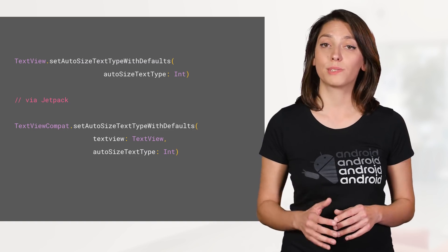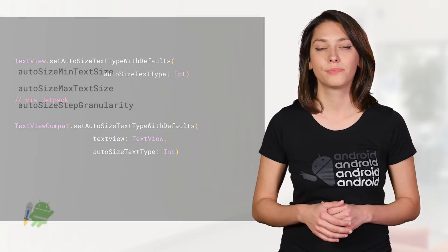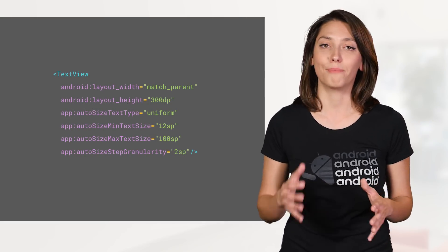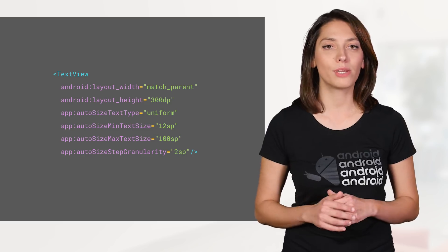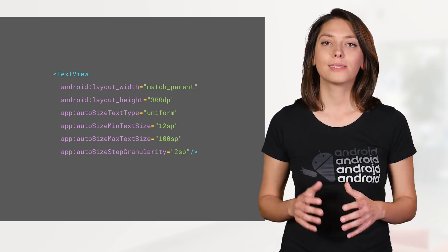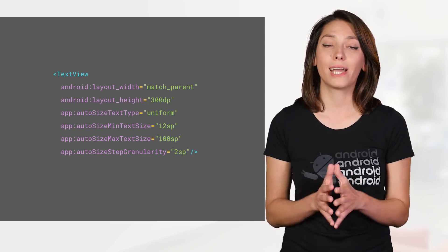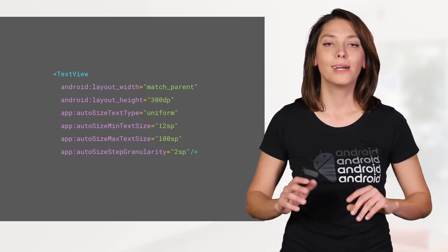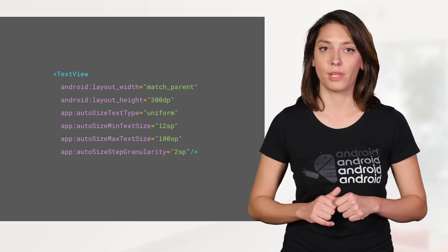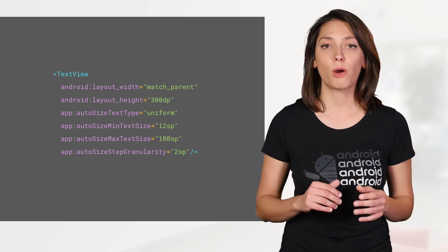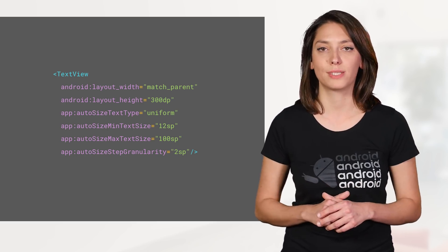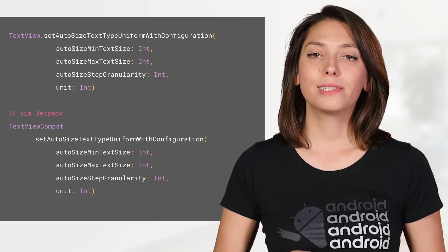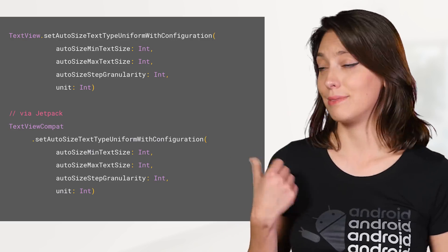You can also use AutoSize programmatically. If you want to customize your TextView more, we have some extra attributes: AutoSizeMinTextSize, AutoSizeMaxTextSize, and StepGranularity. The TextView will scale uniformly in the range between the minimum and the maximum size in increments of step granularity. If you don't set these properties, default values will be used. Programmatically, these values can be set via this method.